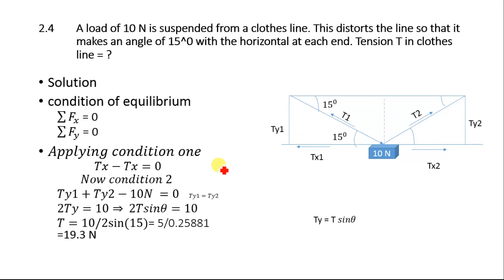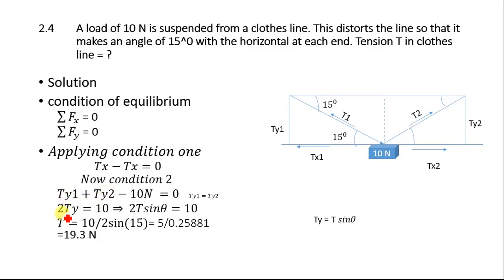Applying condition two: Ty1 plus Ty2 minus 10 newtons equals zero. Both Ty1 and Ty2 point upward, so we combine them as 2Ty. This gives 2Ty equals 10 newtons.